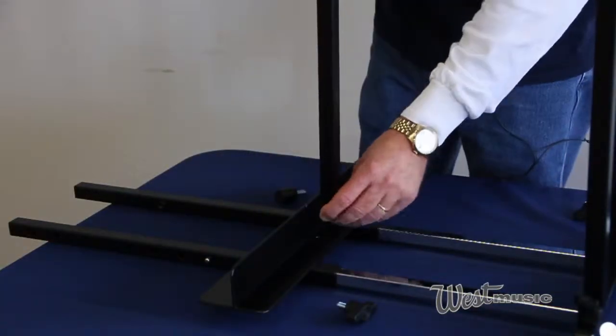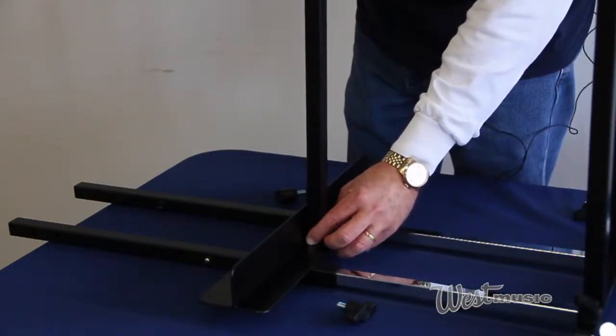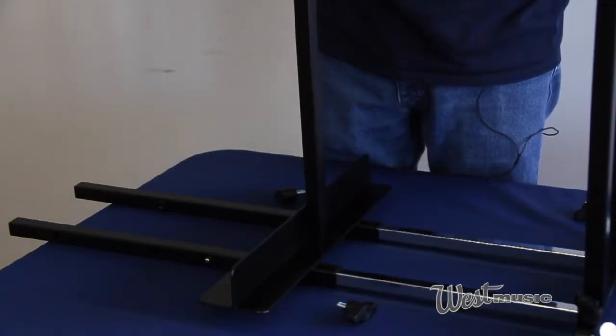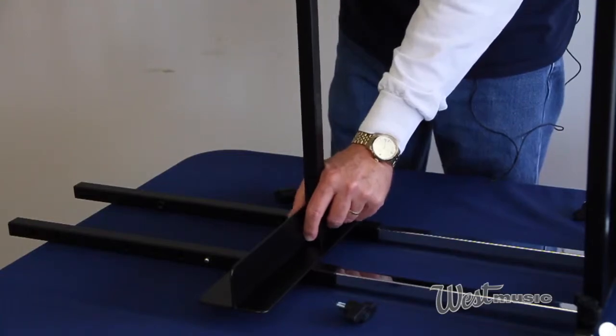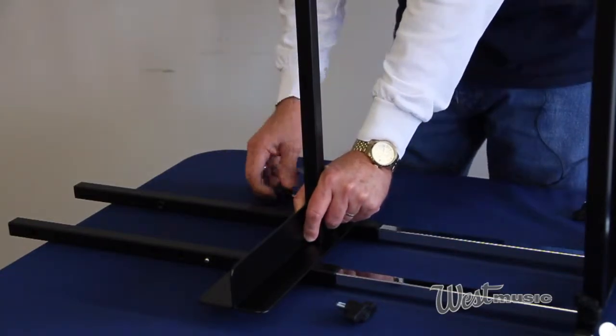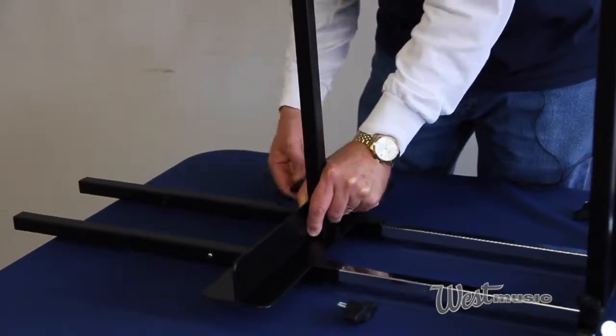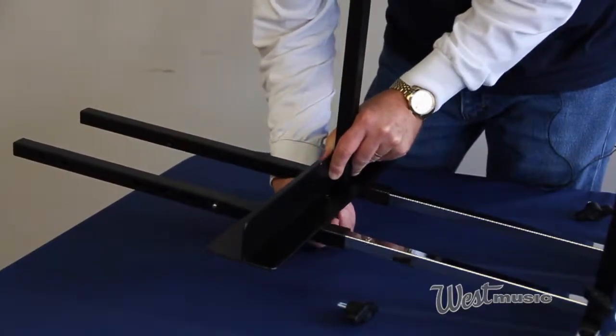And next we attach the cross bar, remembering to have this screw hole facing the others so we'll have access to this after the instrument has been put in place.